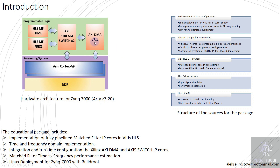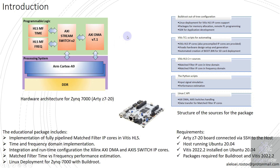A Linux application demonstrates how to handle all IP cores under Linux, including data transfer for matched filter IP cores. To leverage the educational package, the following requirements should be met: I am using an RTZ 720 board with Zynq 7000, connected via SSH to a host running Ubuntu 20.04 with Vitis 2022.2 installed, along with all mandatory packages required for Buildroot and Vitis.